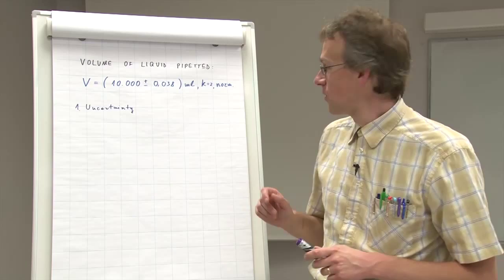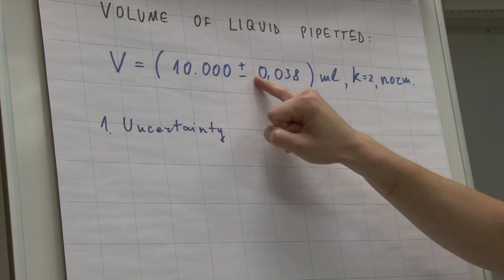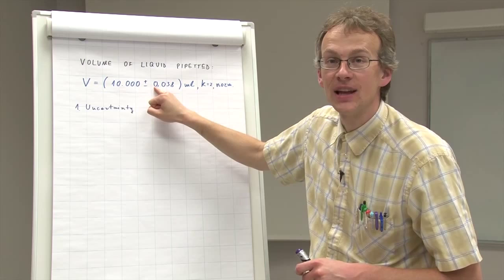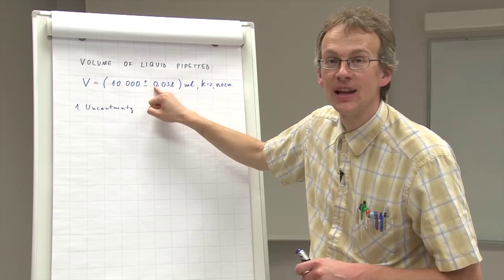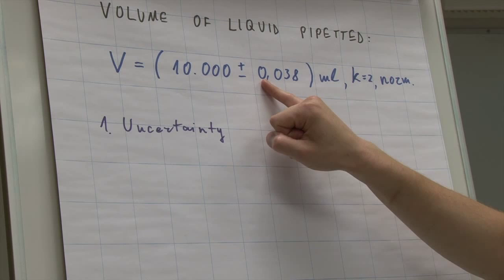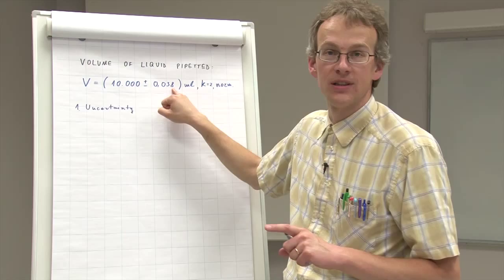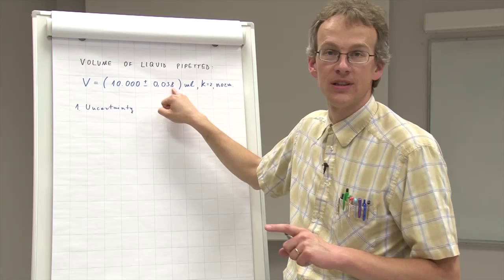And significant digit means the following. You start counting the digits from the left and any digit that is not zero is called significant digit. So we come here zero, not a significant digit. Zero, not a significant digit. Three is a significant digit. And eight also, so we get one, two digits. So we have here two significant digits.